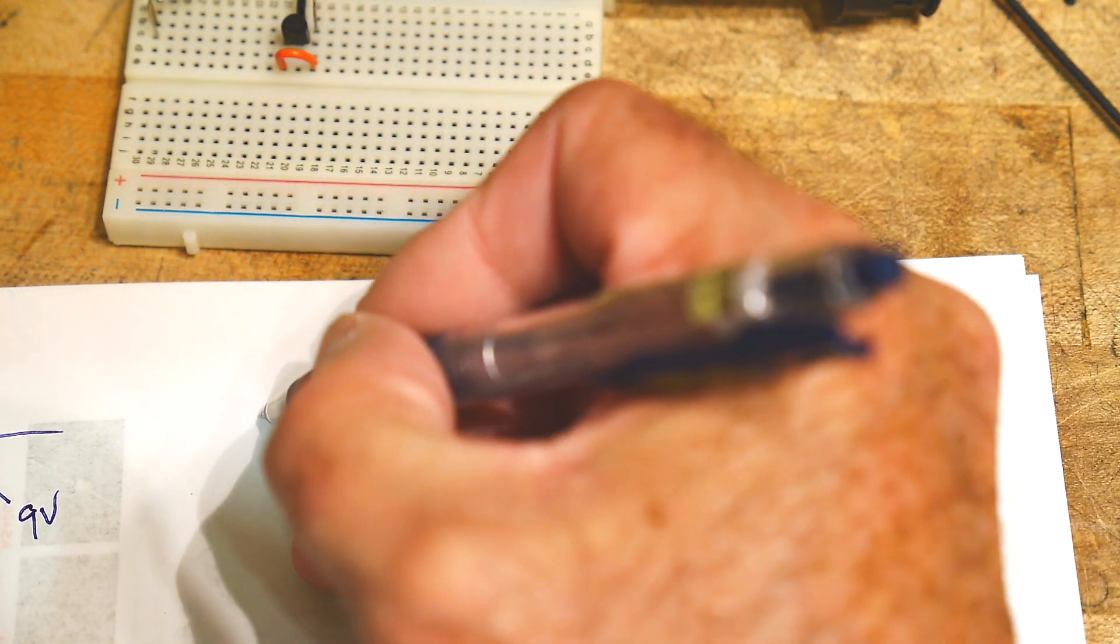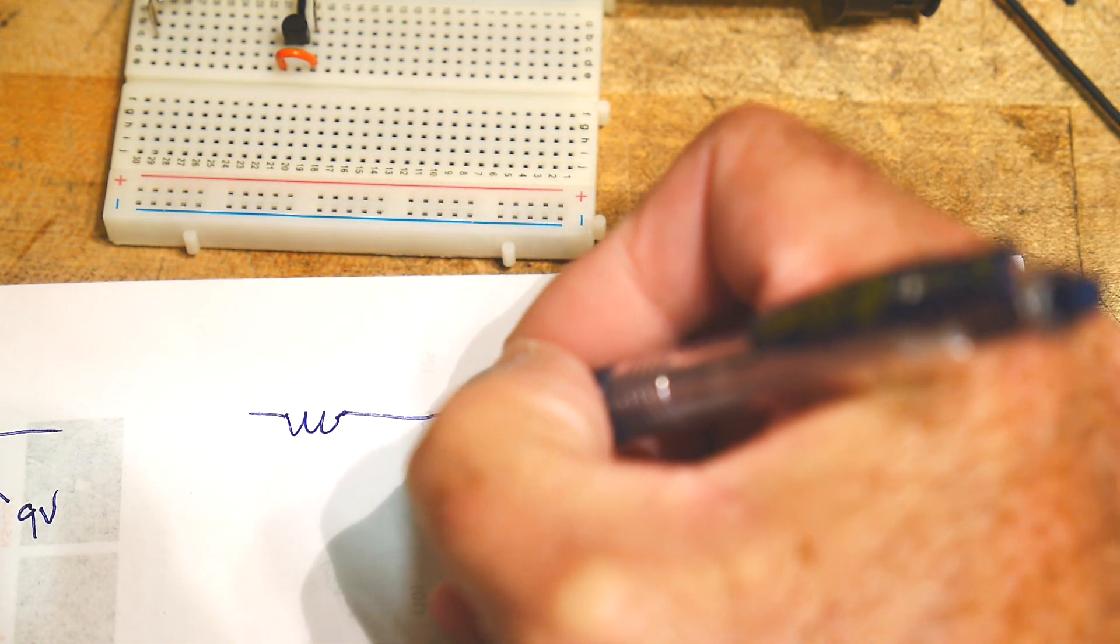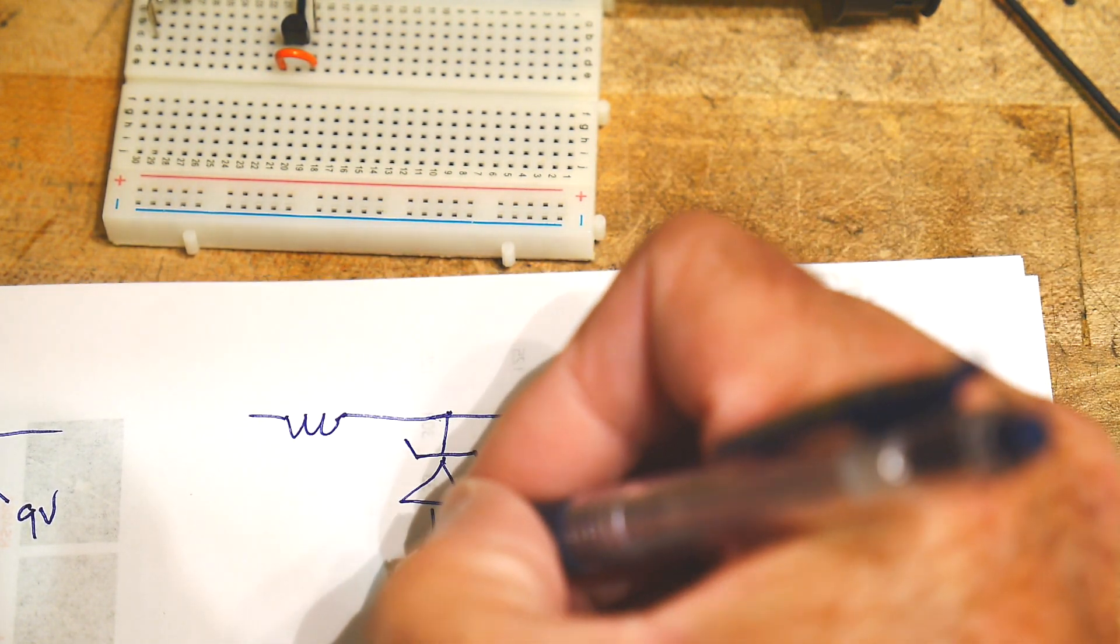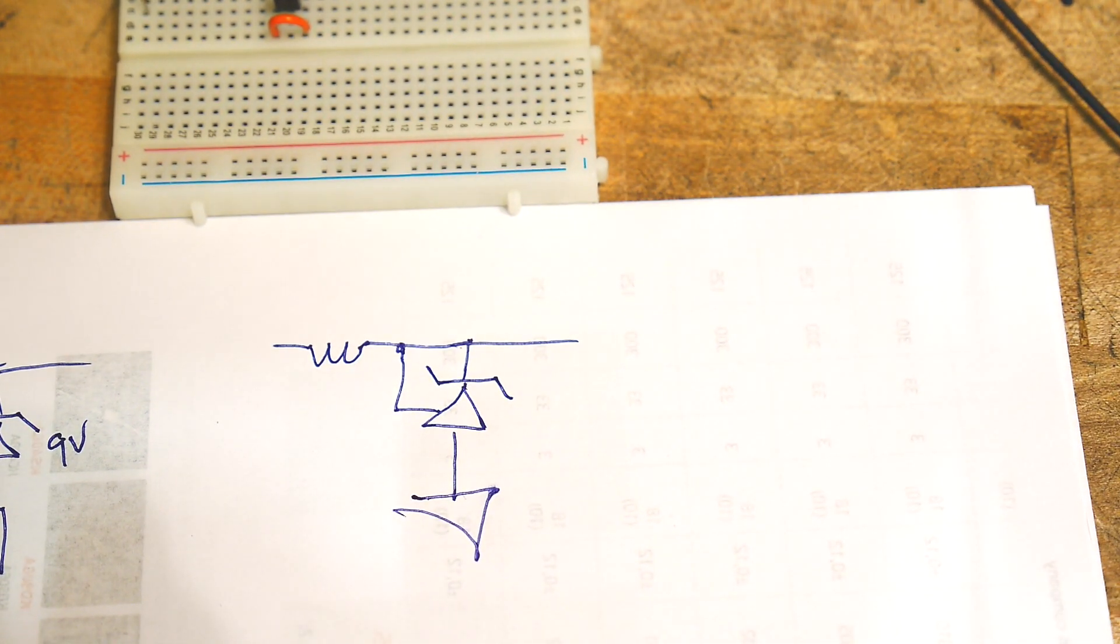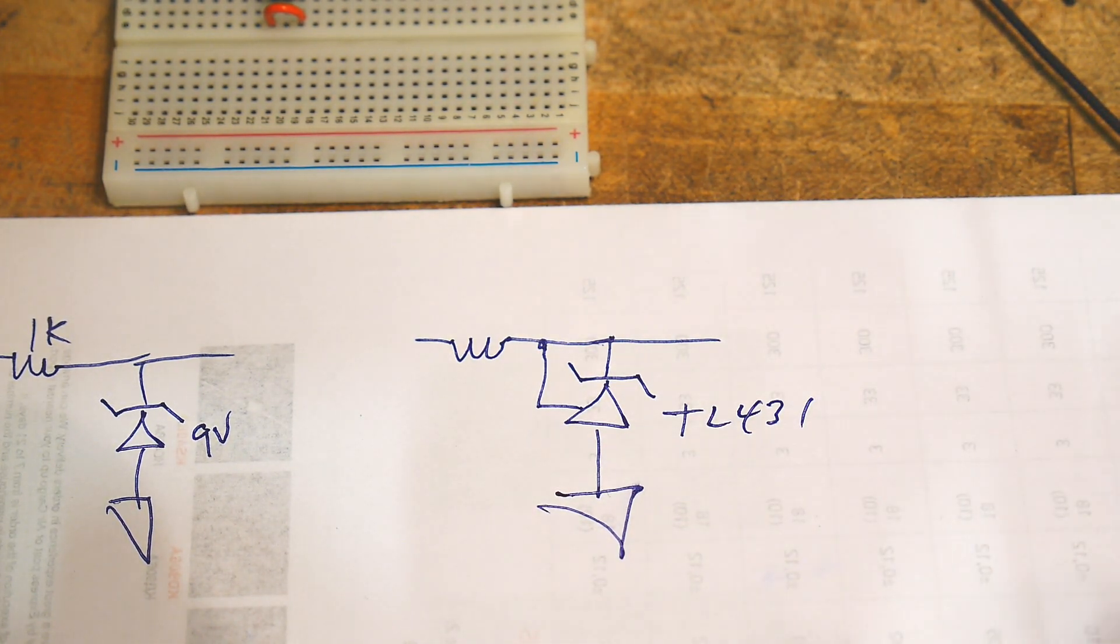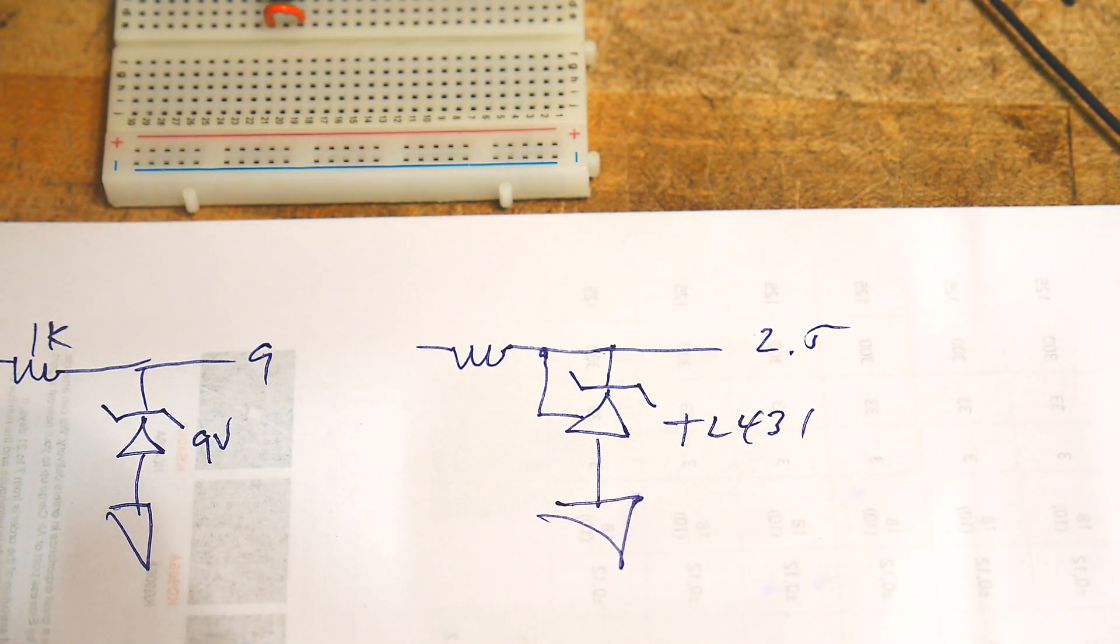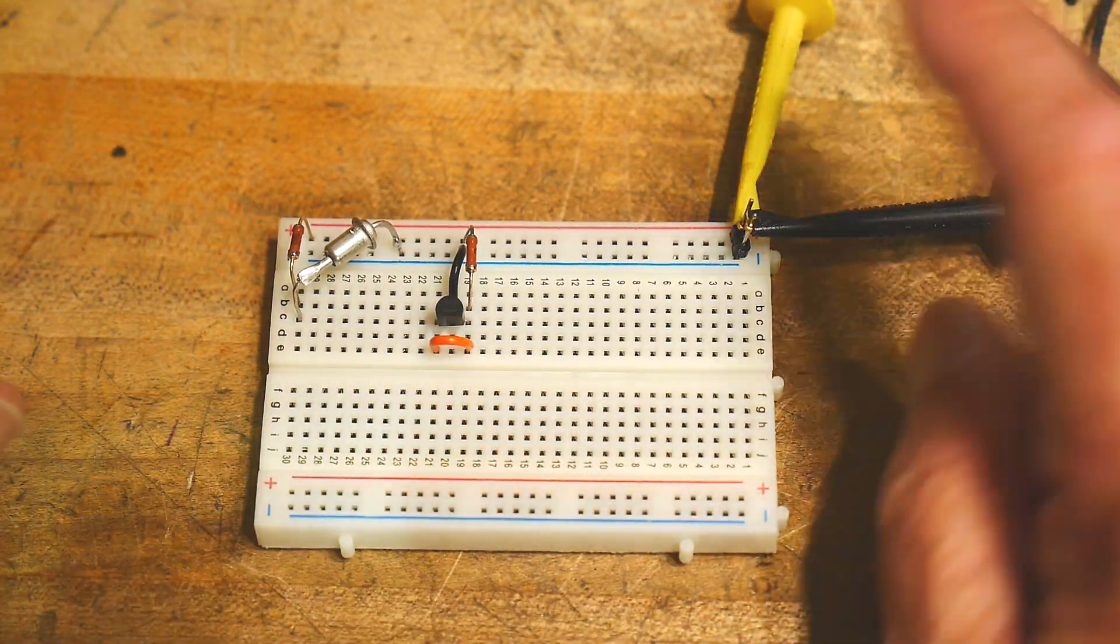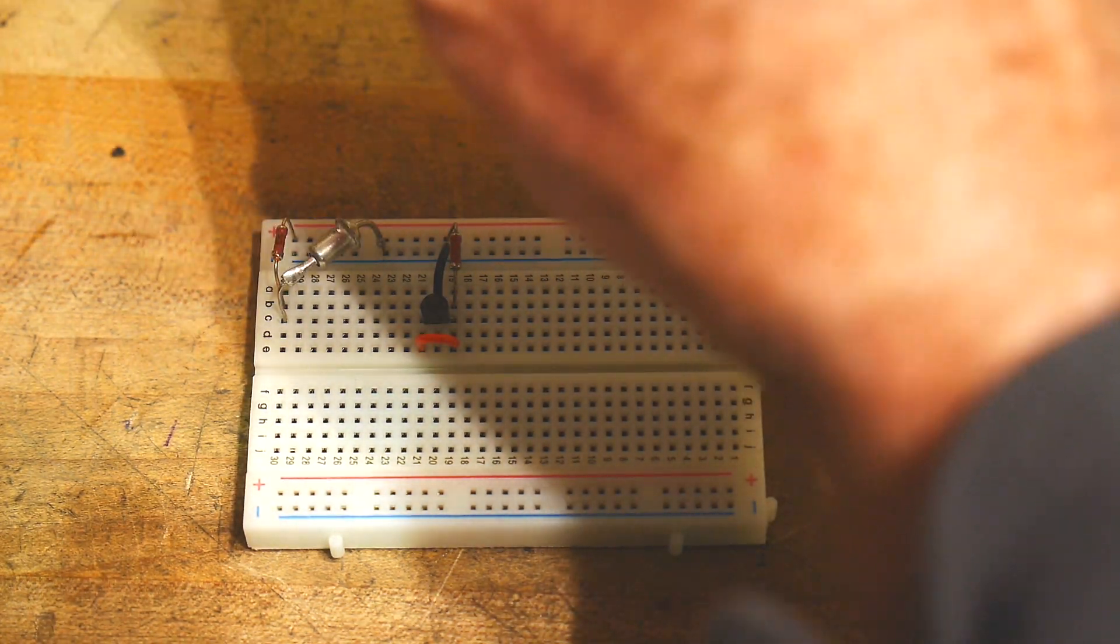And then the second circuit looks like this. This is the TL431. This should output 2.5V and this should output 9V. So we'll apply 12V to the input and we will measure it.